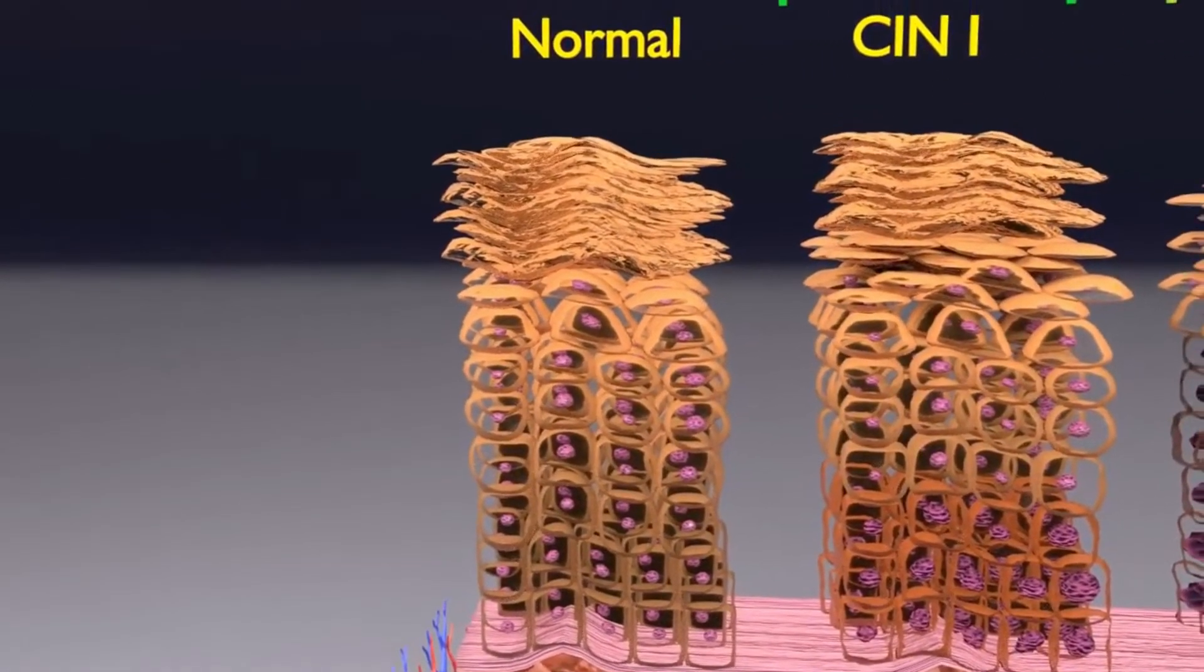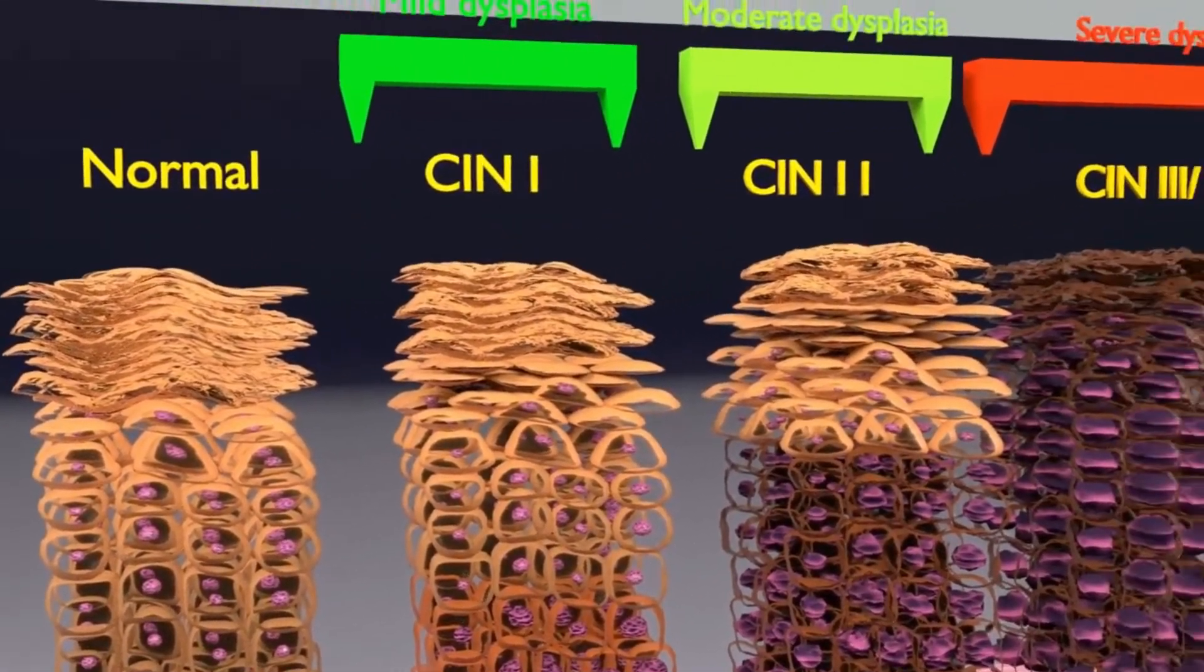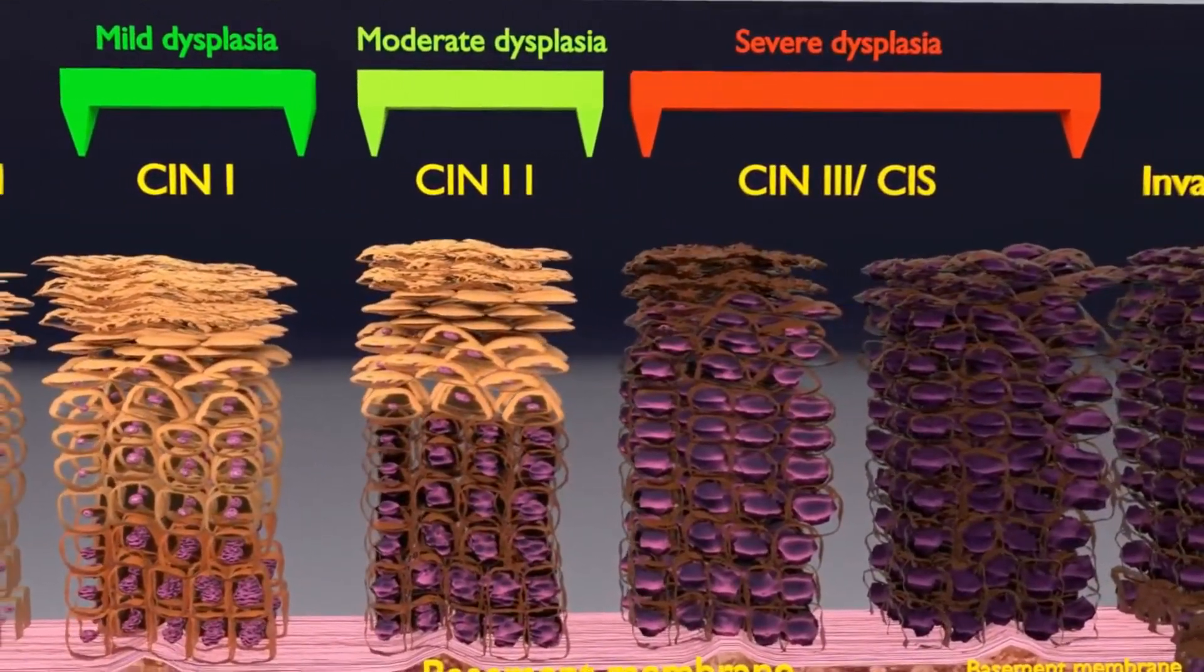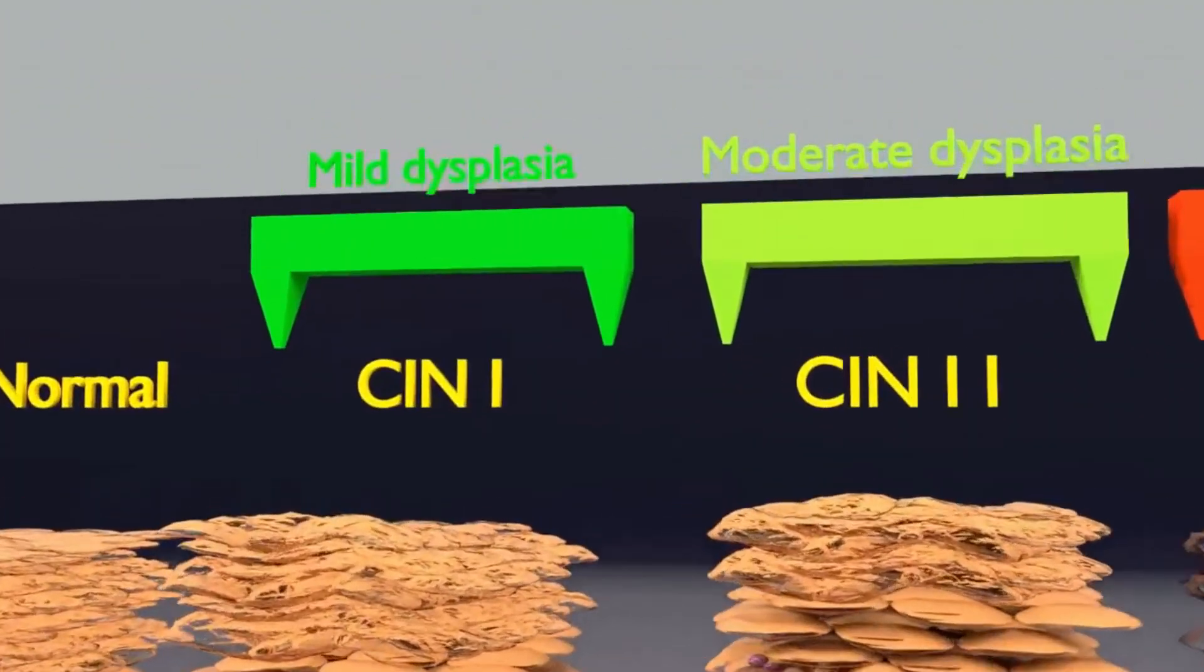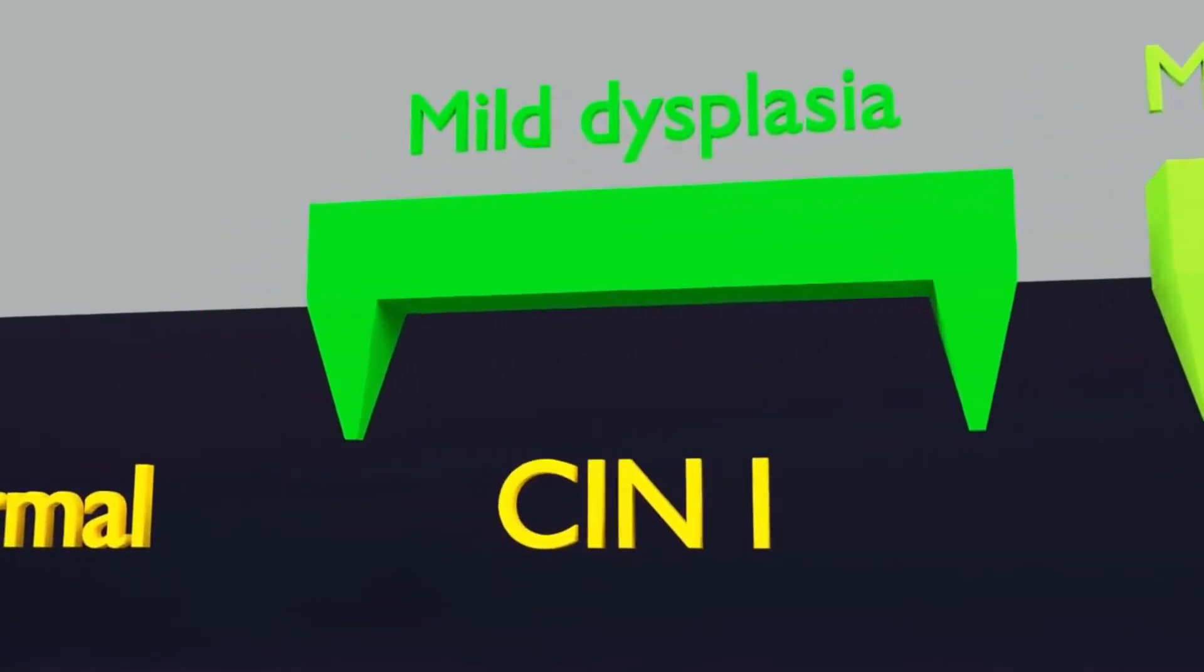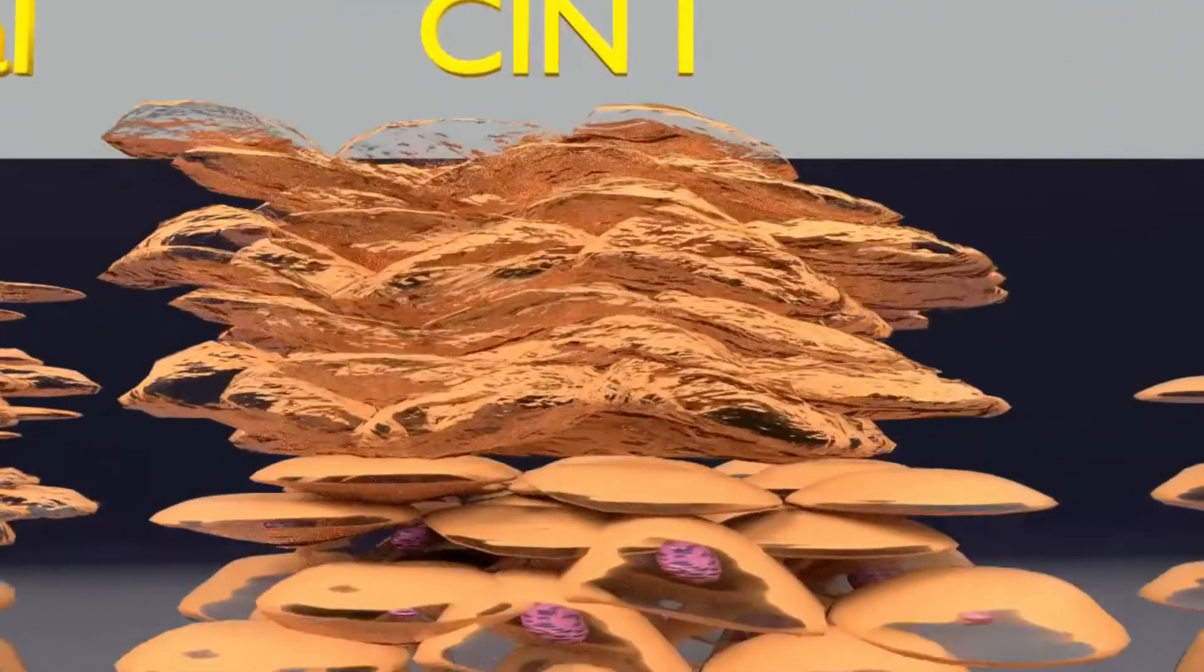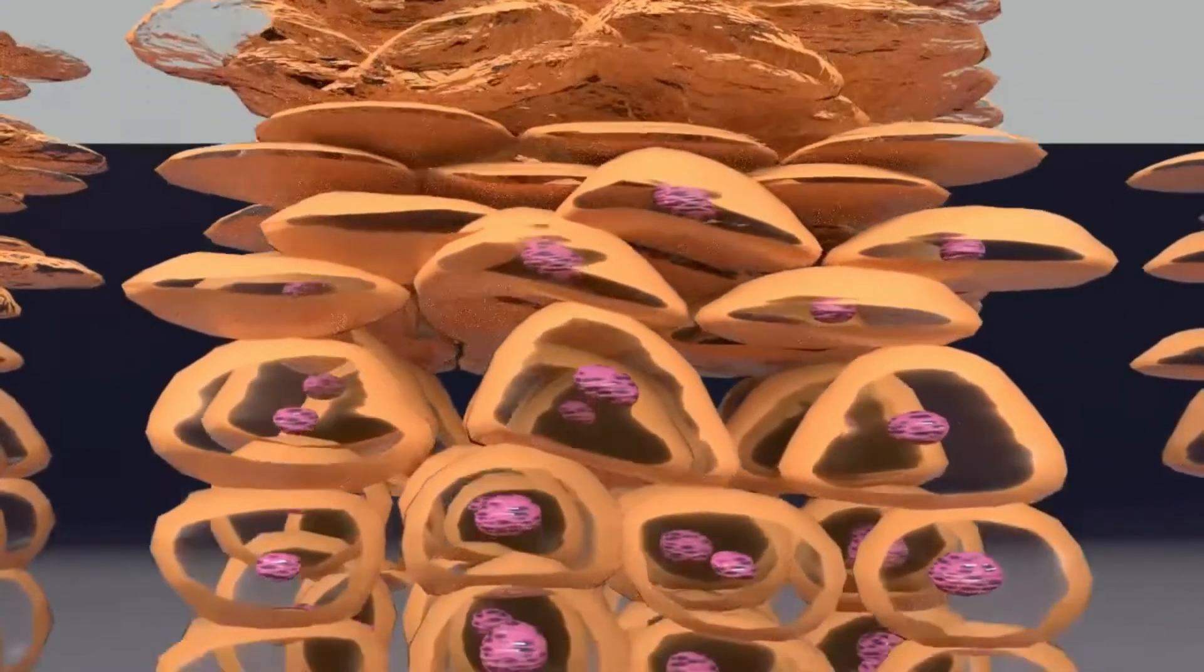Now focusing on the mild type of pre-malignant changes in the cervical epithelium, also otherwise called cervical intraepithelial neoplasia 1 or mild dysplasia, you can see involvement of basal or deeper one-third of the epithelium.